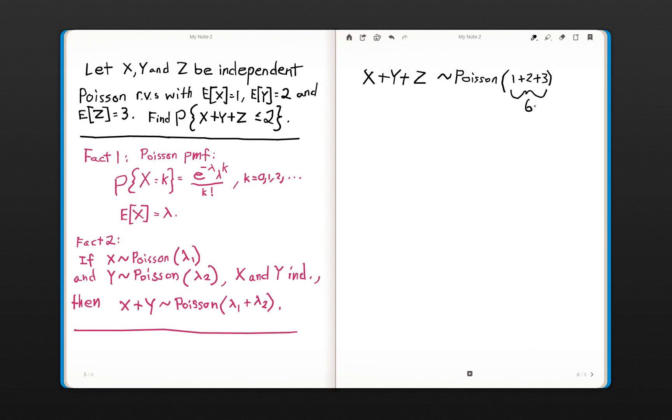Now we know what the PMF of X plus Y plus Z is, and that's where we employ fact 1. We can go ahead and jump right to the question here, and then employ the formula of the probability mass function with lambda equaling 6.